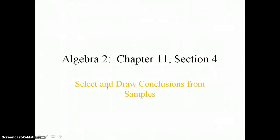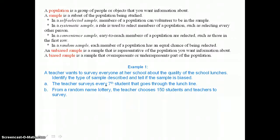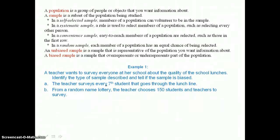In lesson 11.4, you will select and draw conclusions from samples. A population is a group of people or objects that you want information about. A sample is a subset of the population being studied. An unbiased sample is representative of the population you want information about, while a biased sample over-represents or under-represents part of the population.